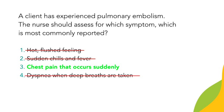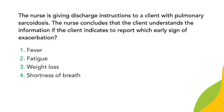The next question says that a nurse is giving discharge instructions to a client with pulmonary sarcoidosis. The nurse concludes that the client understands the information if the client indicates to report which early sign of exacerbation. Option one: fever. Option two: fatigue. Option three: weight loss. Option four: shortness of breath. Right off the bat, all of these answer choices seem correct, so we need to define pulmonary sarcoidosis and look for the early sign.